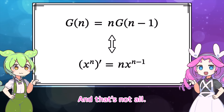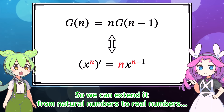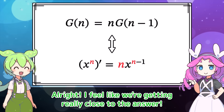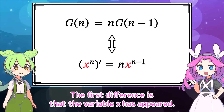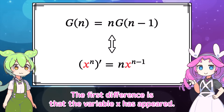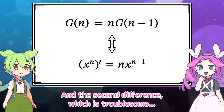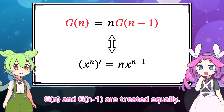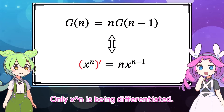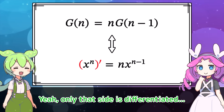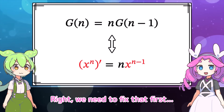And that's not all — this formula still holds even if n is extended to real numbers, so we can extend it from natural numbers to real numbers. But we can't relax just yet. There are still crucial differences between the two equations. The first difference is that the variable x has appeared. The second difference, which is troublesome: g of n and g of n minus 1 are treated equally, but x to the n and x to the n minus 1 are not treated equally. Only x to the n is being differentiated — there's an imbalance. We need to fix that first.